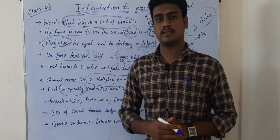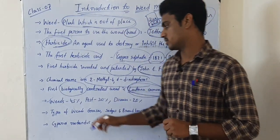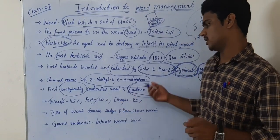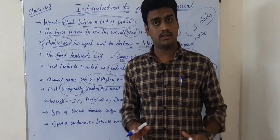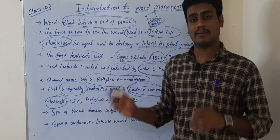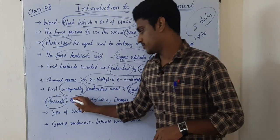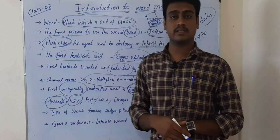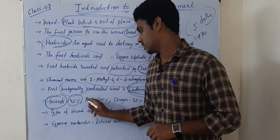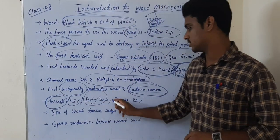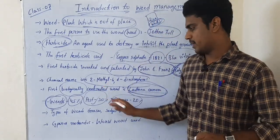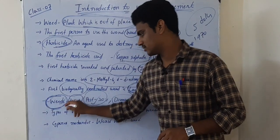In agriculture, losses occur due to weeds, pests, disease, and other factors. Among all these, weeds cause the greatest damage — around 45% loss in agricultural crops. Pest damage accounts for 30%, disease for 20%, and other causes for 5%. So weeds cause the maximum loss, which is also an important exam point.